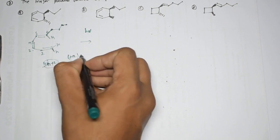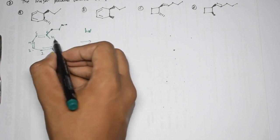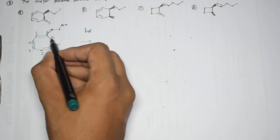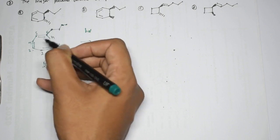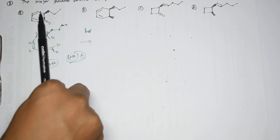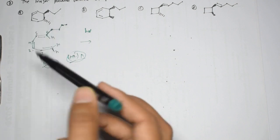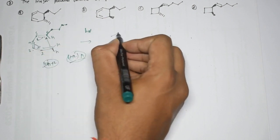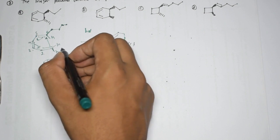This is a 4+2 pi system undergoing a photochemical reaction (hν). In photochemical conditions for a 4+2 system, conrotation takes place. The groups in the plane: upon conrotation, one group comes above the plane and one goes below the plane, forming a six-membered compound.